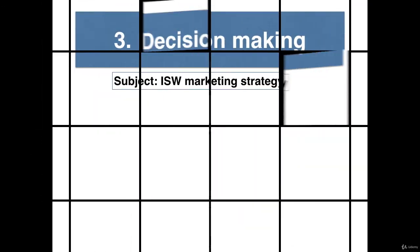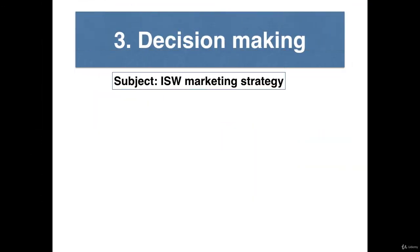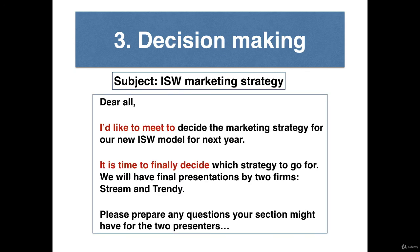Our final purpose is to make a decision. Here is our example email invitation. Dear all, I'd like to meet to decide the marketing strategy for our new ISW model for next year. It's time to finally decide which strategy to go for. We will have final presentations by two firms, Stream and Trendy. Please prepare any questions your section might have for the two presenters. Language that shows it is about decision making includes: 'I'd like to meet to decide' and 'It's time to finally decide.' Other useful language could be: 'We have to choose the best solution,' 'The meeting is to finalize the details for,' and 'By the end of the meeting, we need to select the two best options.'